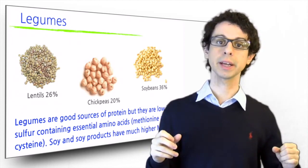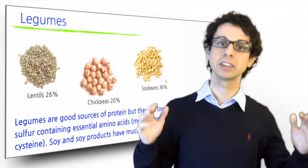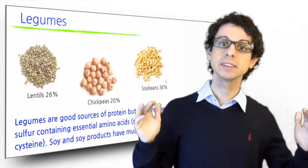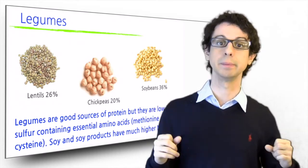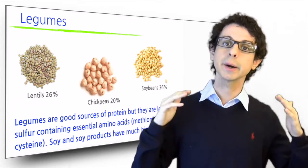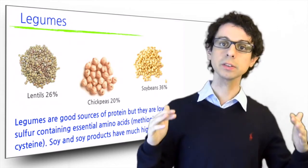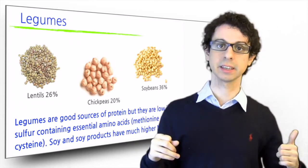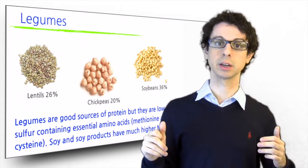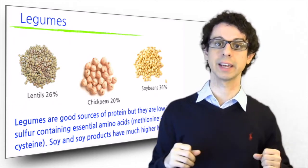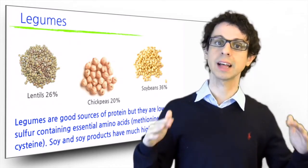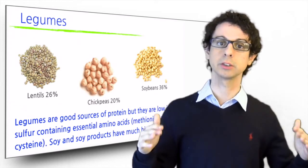Soy and soy products are exceptional sources of vegetable protein with 36 percent that ends up being even more than meat. Besides having higher protein content, they also have more methionine and cysteine, and thus a much better protein quality compared to that of other legumes. Many nutritionists actually consider soy protein to be complete.